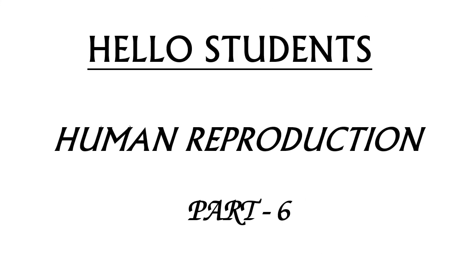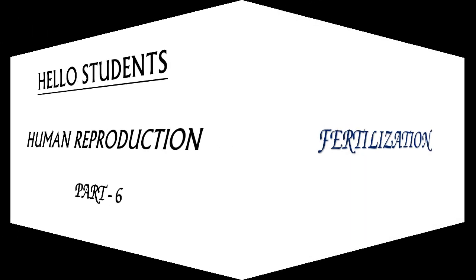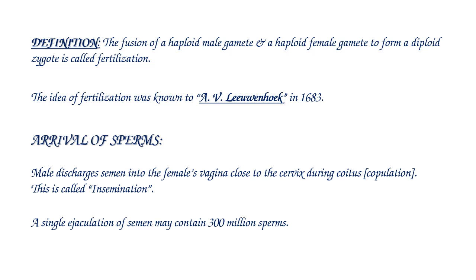Hello students, welcome back. Today we are going to discuss human reproduction part 6. Today's concept is fertilization. Fertilization is defined as the fusion of a haploid male gamete and a haploid female gamete to form a diploid zygote. The idea of fertilization was known to Anton van Leeuwenhoek in 1683.